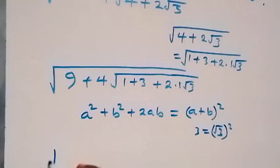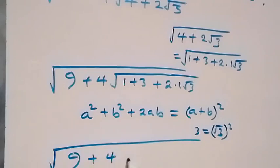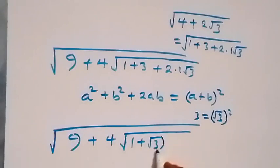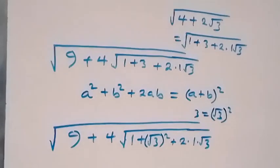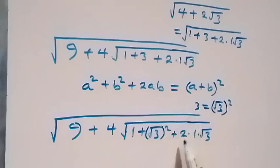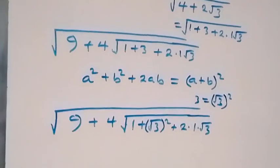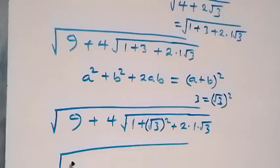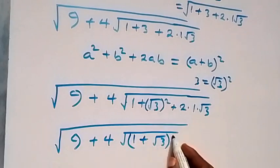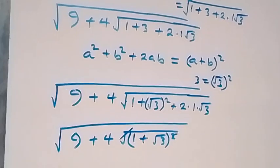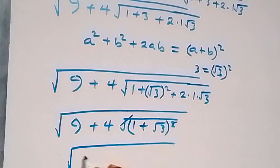So what we have here can be written as square root of 9 plus 4, then root of — this will simply be in the form of (a plus b) squared, which is (1 plus root 3) squared. So this becomes square root of 9 plus 4, then root of (1 plus root 3) squared. Here this square and square root cancel, and this will become square root of 9 plus 4 into bracket (1 plus root 3).